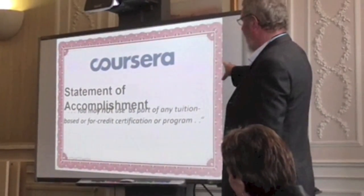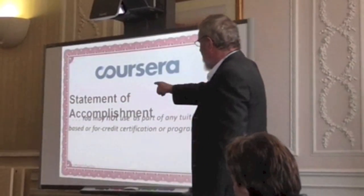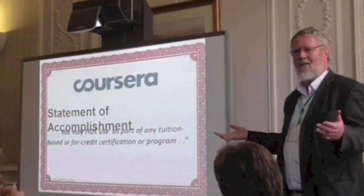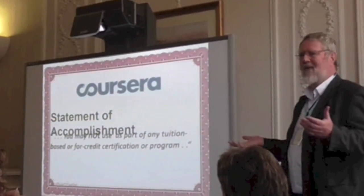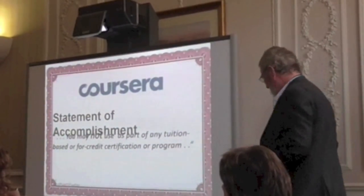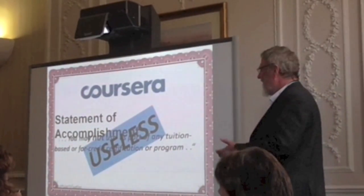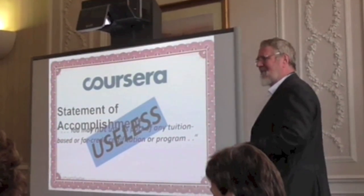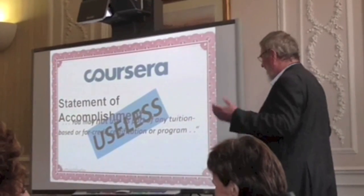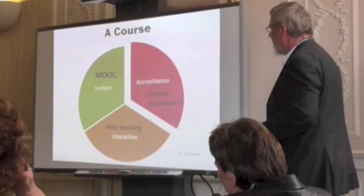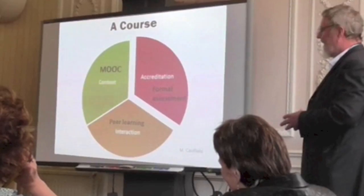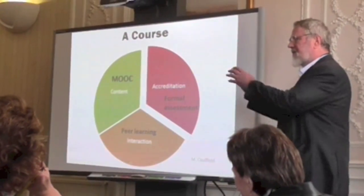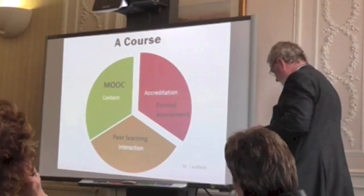If you take a Coursera course, you get a statement of accomplishment — and notice what's written: 'You may not use it as part of any tuition-based or for-credit certification or program.' Well, what's the point? Why do you get a certificate if you can't use it for anything? It's a useless certificate. A course can be broken down: a MOOC can be the content, the accreditation can be quite different, and the peer learning and interaction can be different. A course does not have to be all three things together — these can be broken down and used differently. This is the idea of disaggregation of courses.